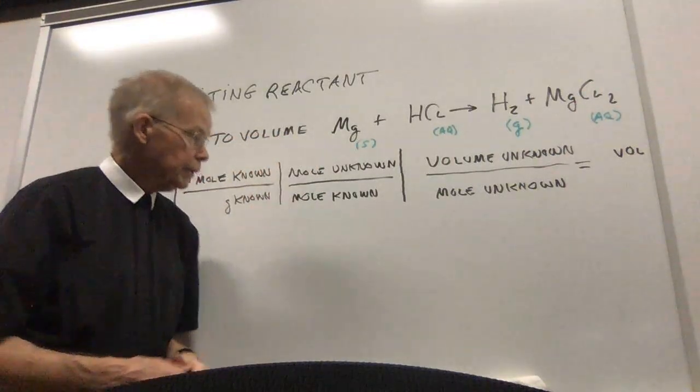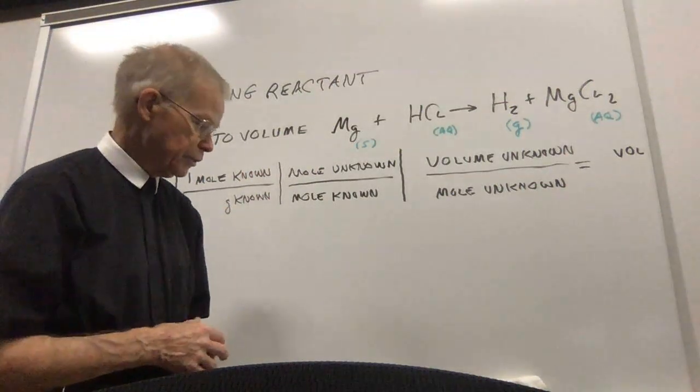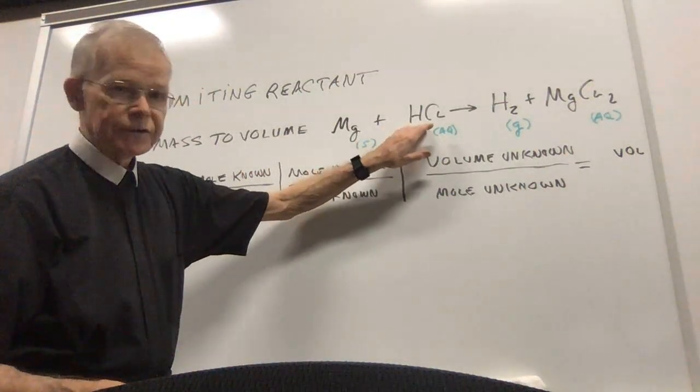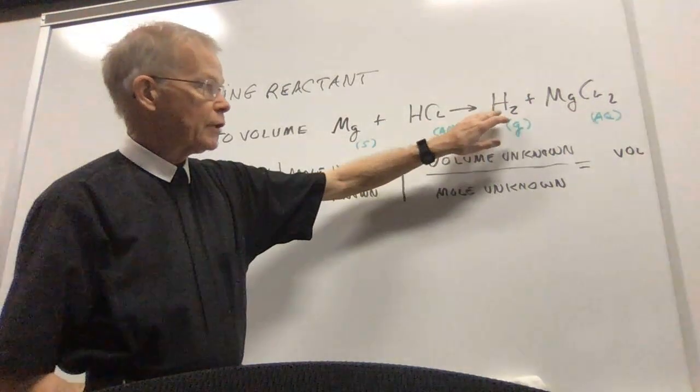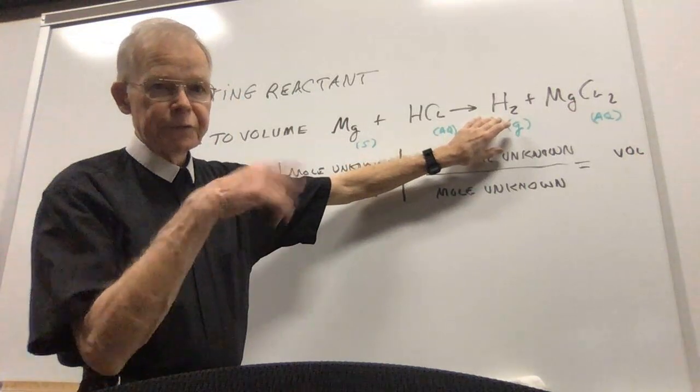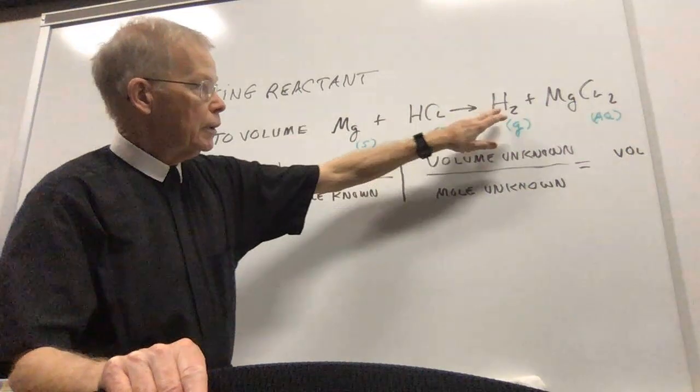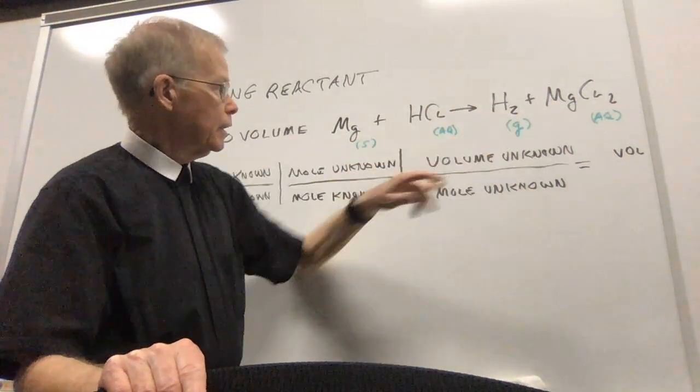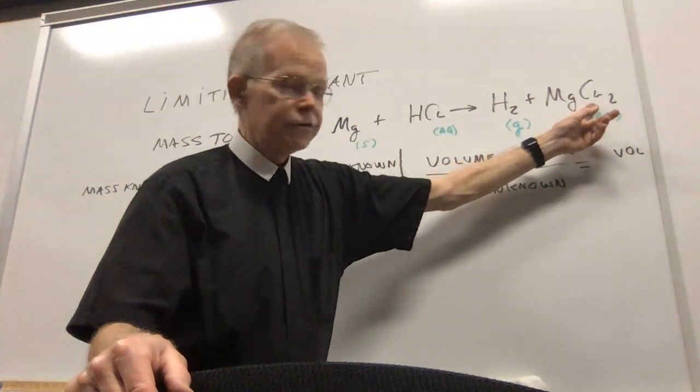The reaction that I'm going to do is a reaction taking place between a piece of magnesium metal, a small piece of it, and hydrochloric acid, pretty strong, about 6 molar. When the reaction takes place, it's going to be a single replacement reaction, so magnesium is going to come in, knock out the hydrogen, I'll get hydrogen gas, and the magnesium and the chloride will form together and produce magnesium chloride.